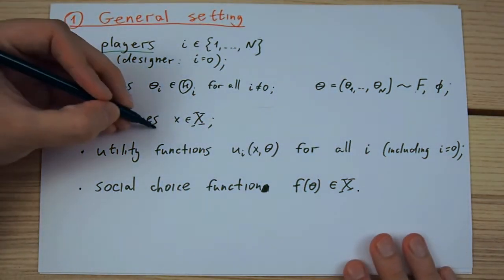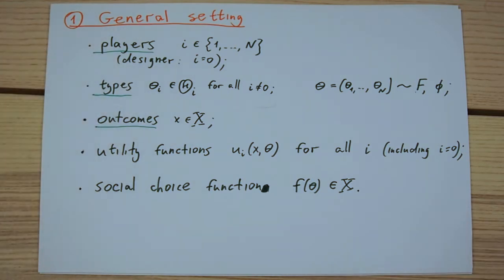Then we have a set of outcomes x and in the general setting we do not impose any restrictions on what this set can be. It can be finite or continuous, single or multi-dimensional, convex or not and so on.